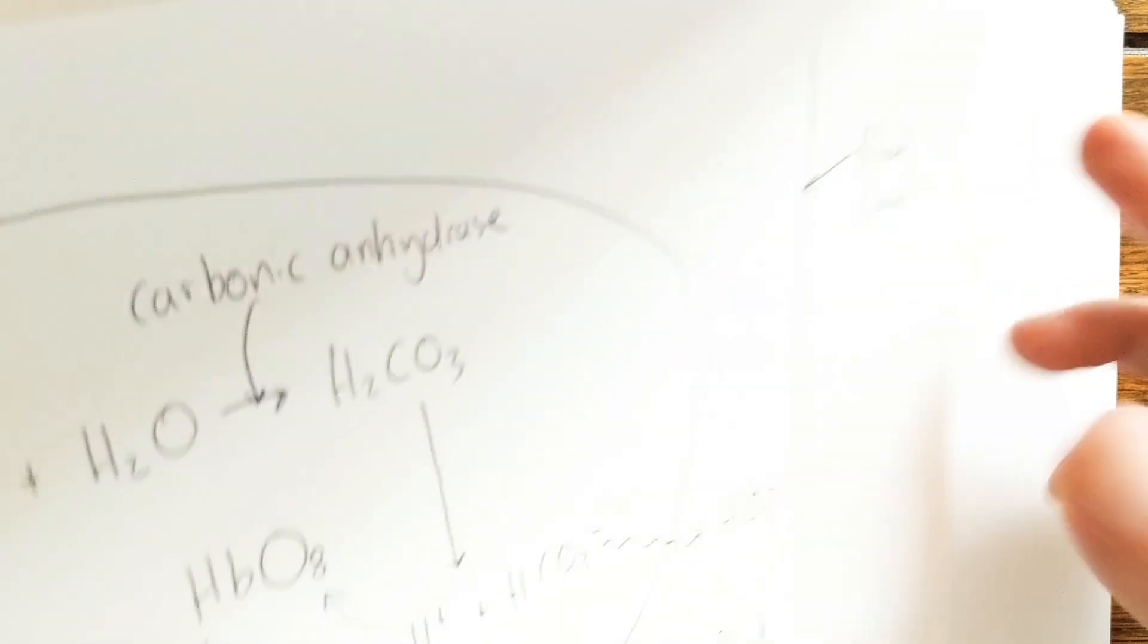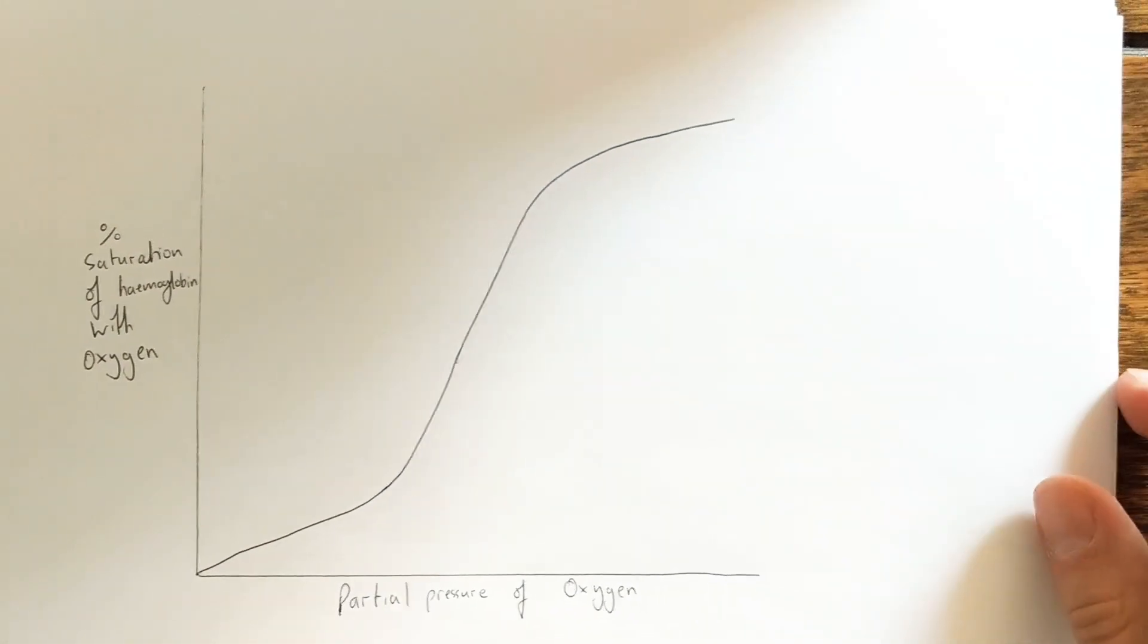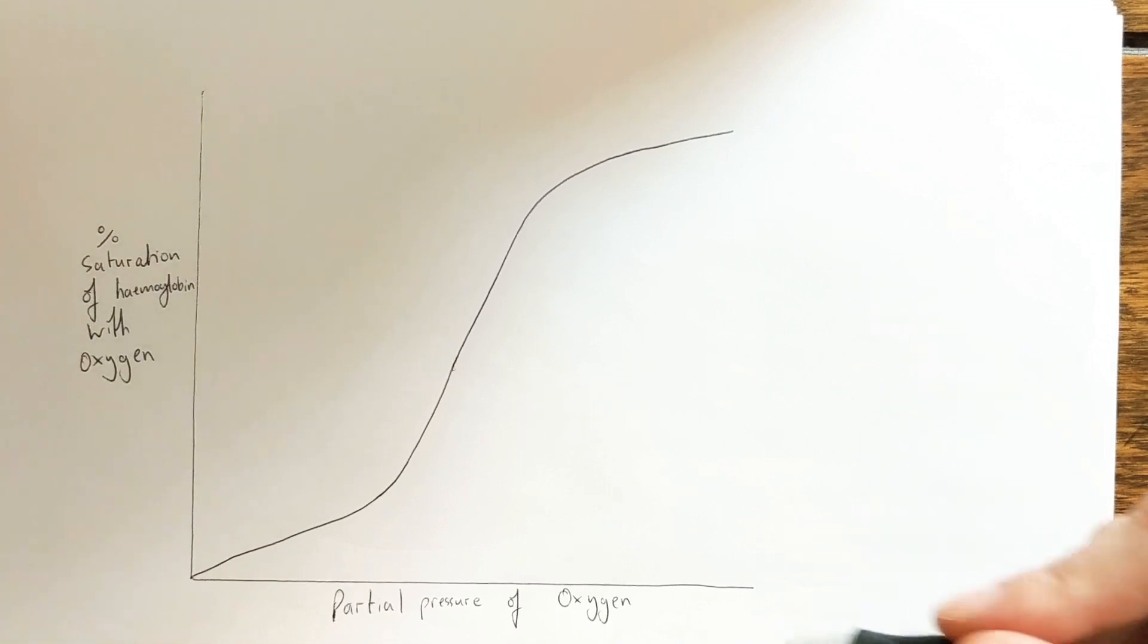And just to link that to the graphs that you should be familiar with, here's one I prepared earlier. This graph shows partial pressure of oxygen and the percentage saturation of hemoglobin with oxygen.